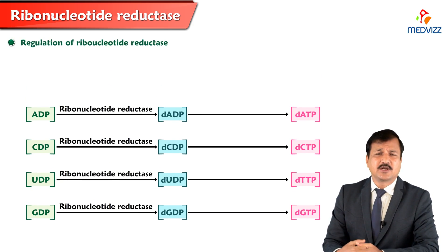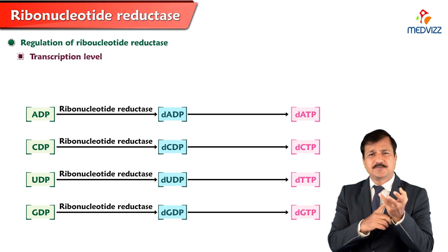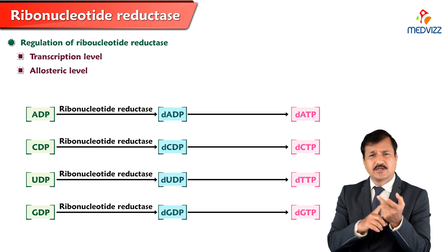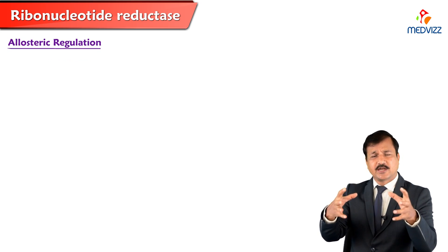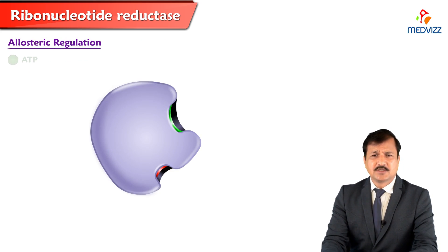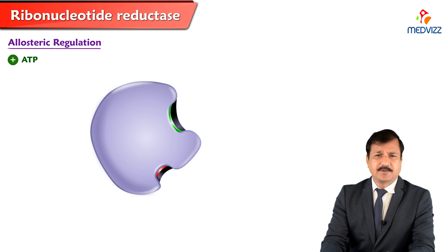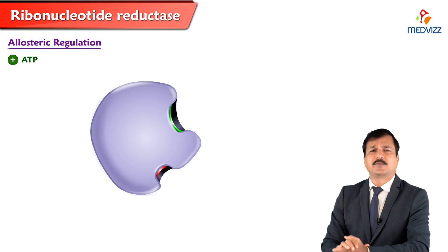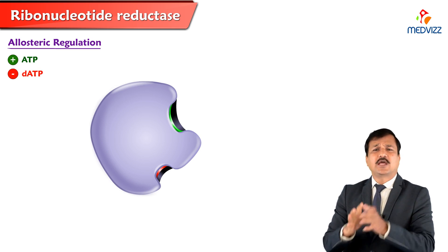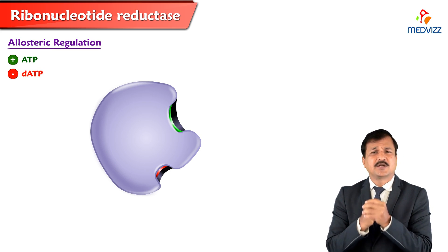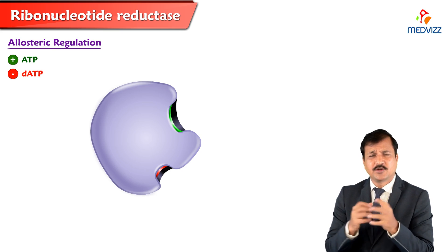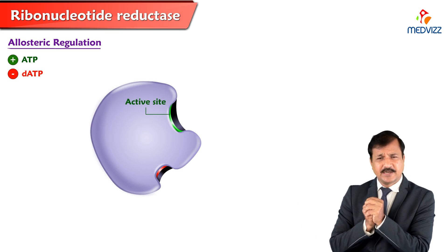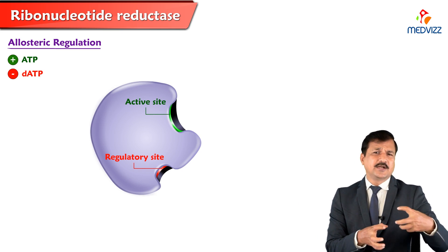The regulation of ribonucleotide reductase is critically important. It can happen at the transcriptional level, at the allosteric level, and also through cell cycle-specific degradation of the protein. Ribonucleotide reductase is a complex enzyme with complex regulation. It has an active site where substrate binds and a regulatory site where regulatory molecules bind. The positive allosteric modulator is ATP, while the negative modulator is dATP.